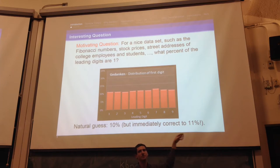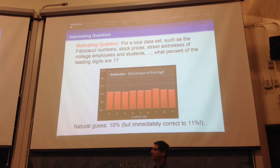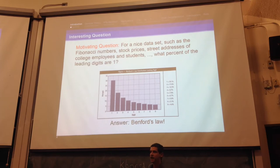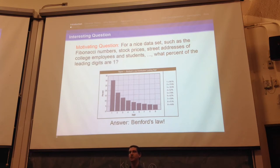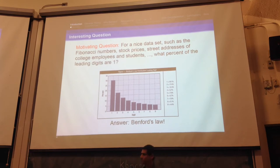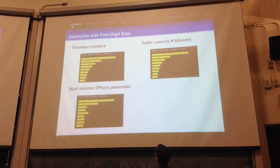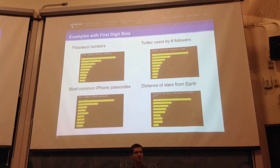If you're actually doing any experiment, you should have some fluctuations — it shouldn't be perfect, because then people will think you've forged the data. The actual answer is Benford's Law, and in a lot of data sets such as Fibonacci numbers, which we'll prove later today, you actually have a first digit of 1 about 30% of the time, going all the way down to about 4.5% of the time having a first digit of 9. Here are some examples: Fibonacci numbers, most common iPhone passcodes, Twitter users by number of followers, and distances of stars from Earth. You see this pattern of digit bias in a lot of different places.